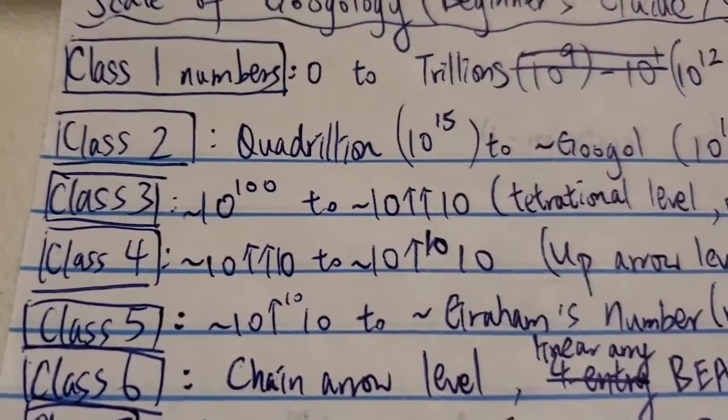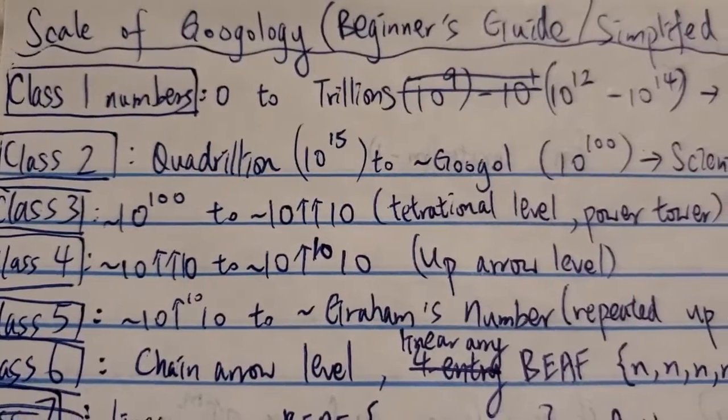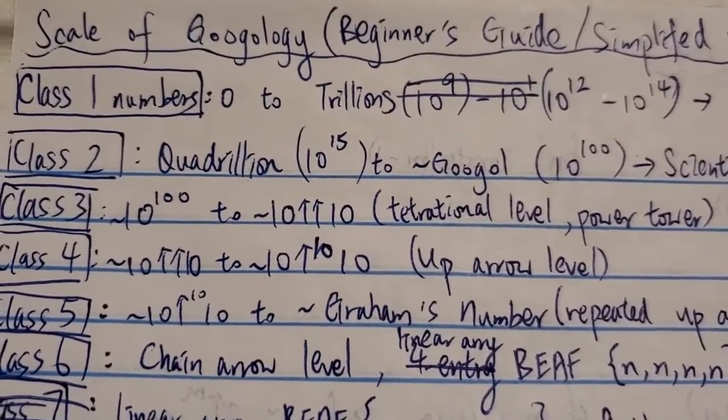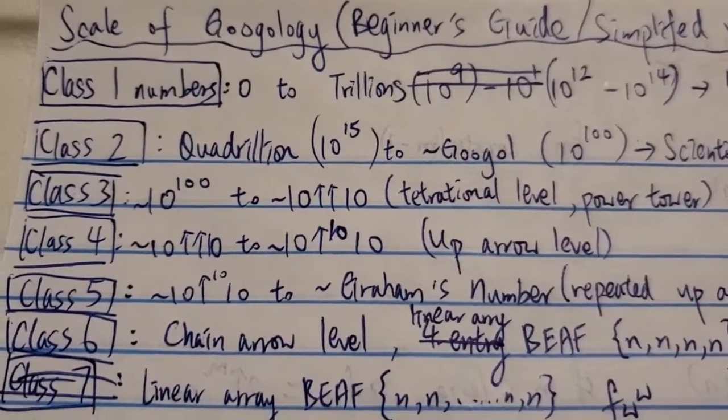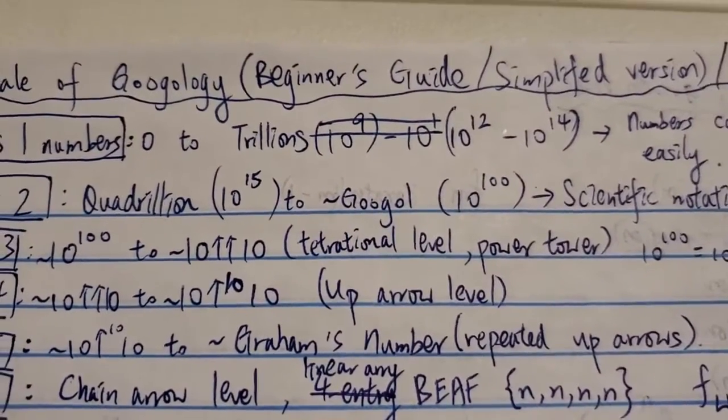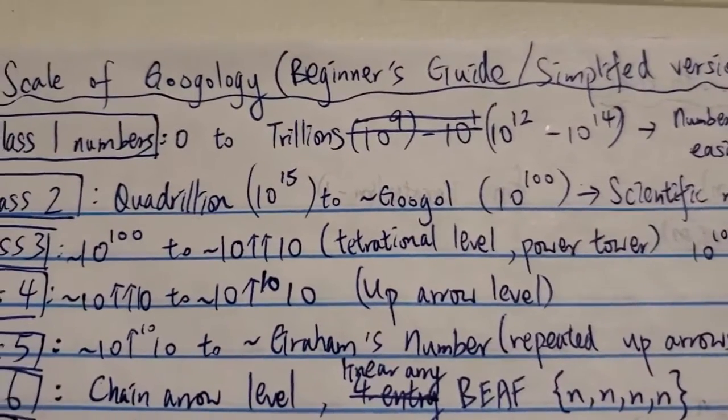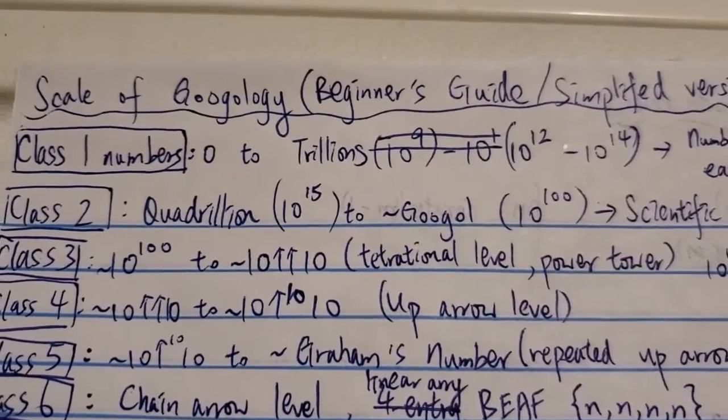Class 4 is somewhere around 10 double arrow 10 to 10, 10 arrows 10. I call this the up arrow level. So this class of numbers is even bigger than just power towers. It's getting difficult to write it in terms of power tower or even like numbers in pentation, heptation.